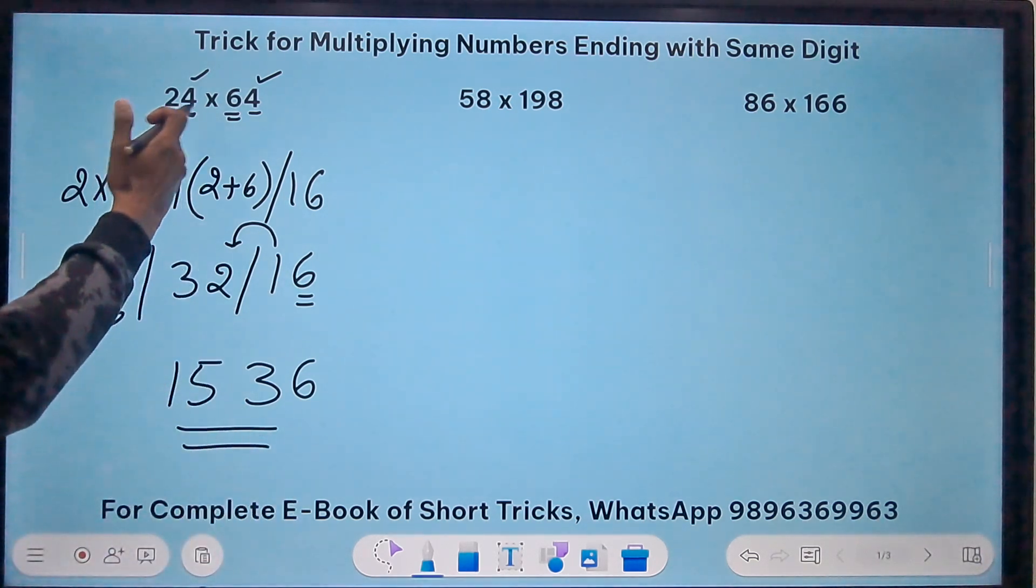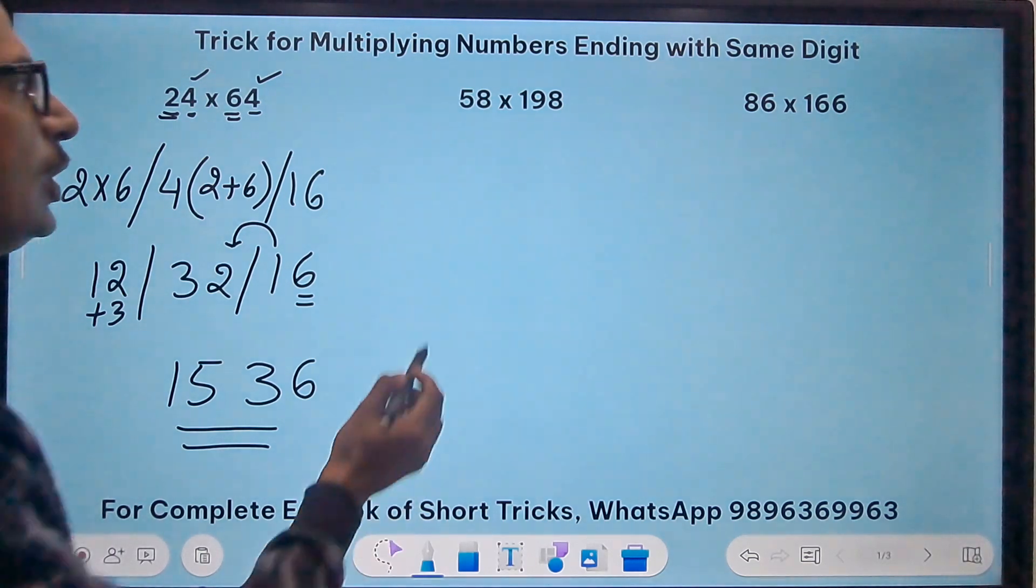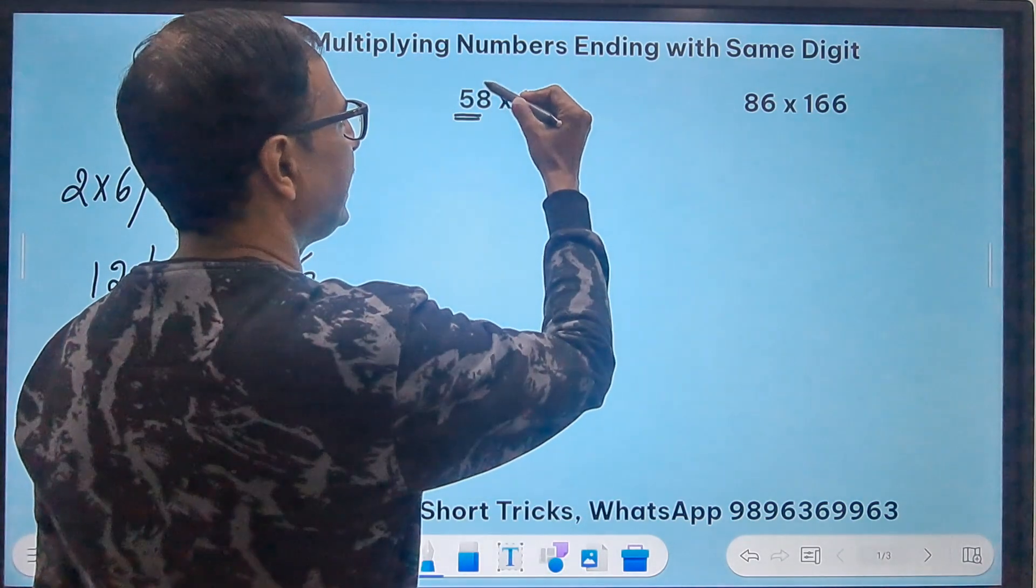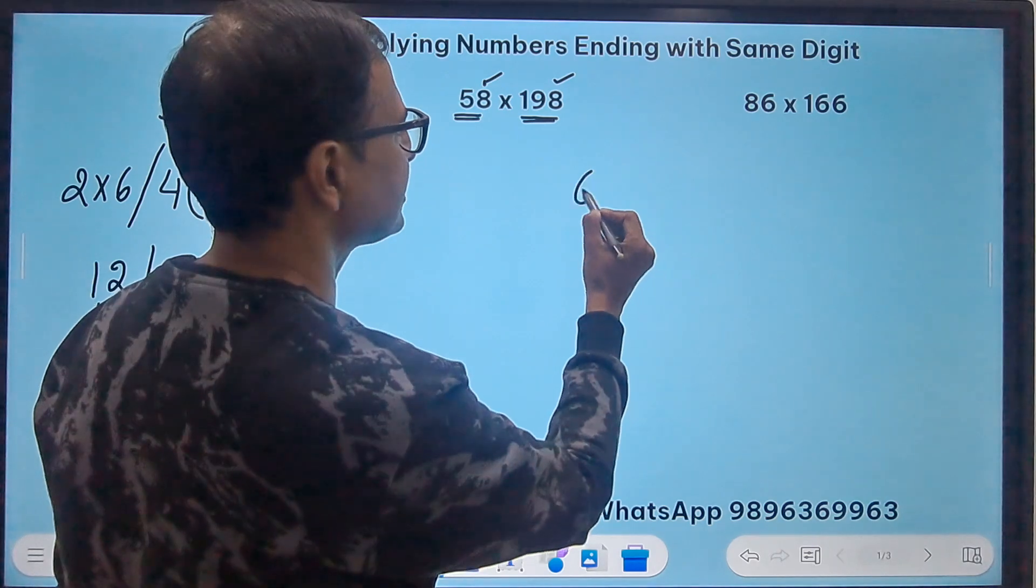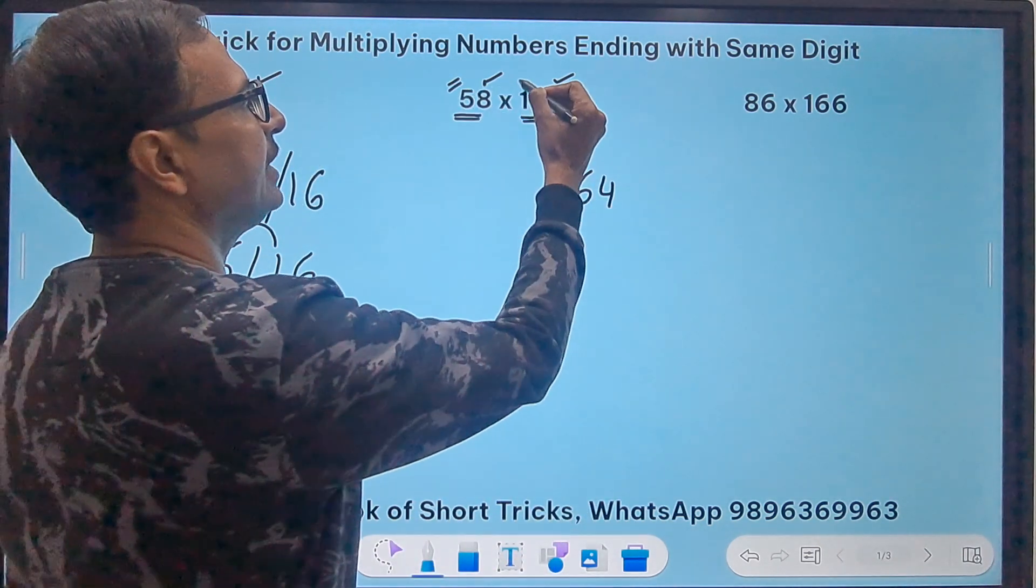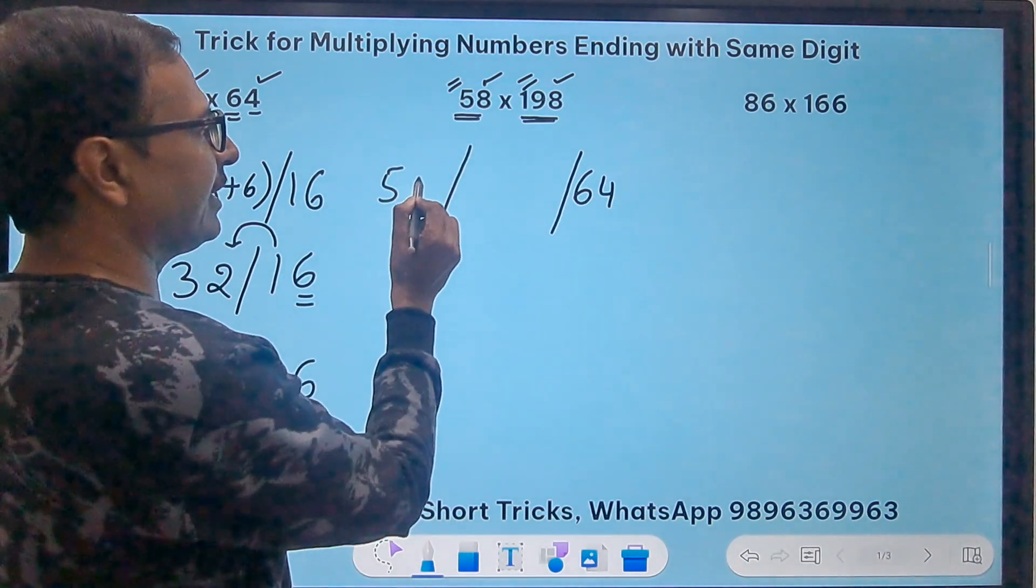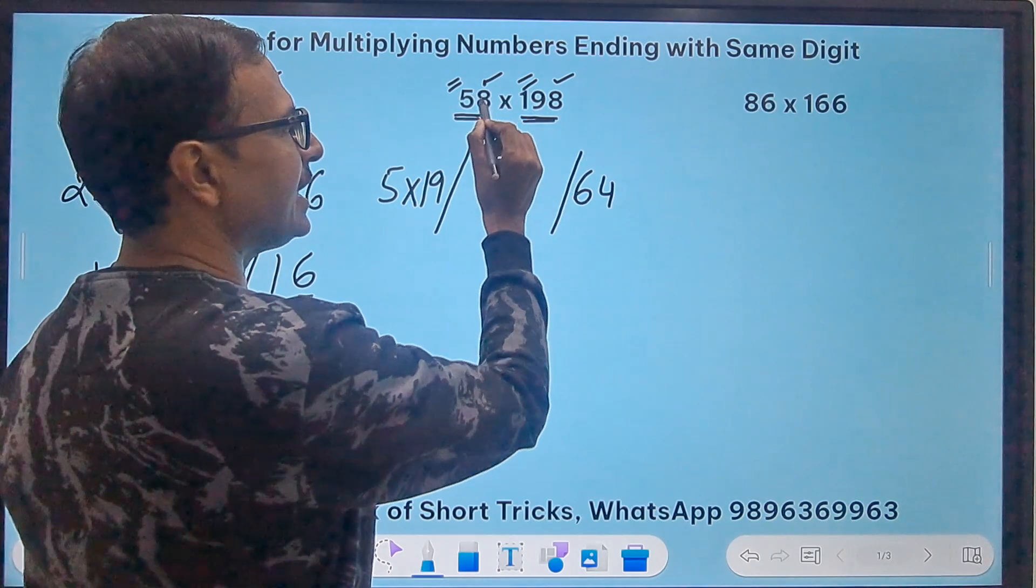Likewise suppose I have the second example here where I have to do a two digit number and a three digit number. I know that 8 times 8 or 8 square is 64 so I will have 64 here. And then the remaining number is 5 and 19, so in the first part I will have 5 times 19 and in the middle because this is 8 so I will be doing 8 times the sum of 19 and 5 which is 24, right?